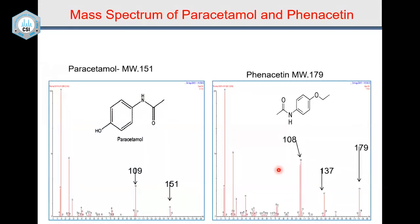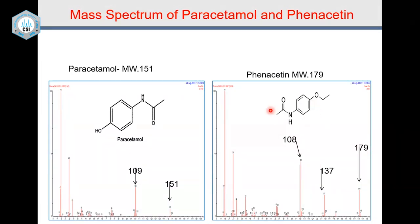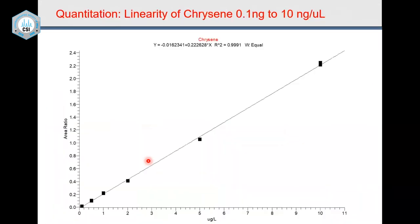This slide shows paracetamol and phenacetin — small molecules — and we can always interpret the various fragment ions to understand where the molecule is breaking. I am not going into interpretation of mass spectrometry today; that can be a separate session. Once you understand mass spectrometry, you can move to the next level, which is interpretation of mass spectra. Note: spectrum is singular, spectra is plural.